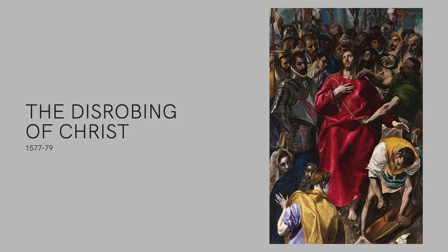Christ is front and center. His red robe draws the viewer's eye to him. He looks skyward, asking his father about the horrors to come. The composition is compact and vertical, forcing the confrontation of the viewers to the scene. In this work, viewers can see the influence of Byzantine art on El Greco. The figures are quite elongated — their proportions are not what we expect from human beings, which almost gives an otherworldly appearance. The rich pigment is also a Byzantine trademark.